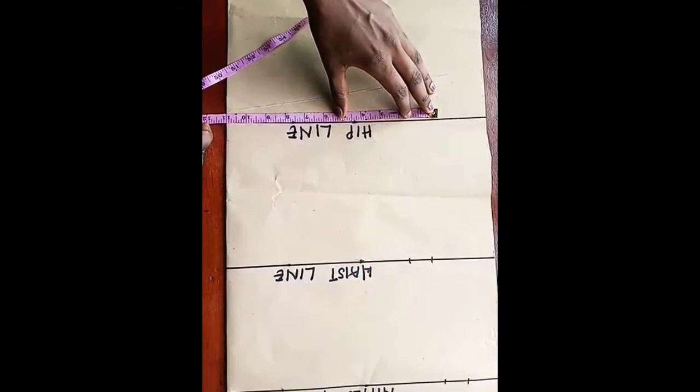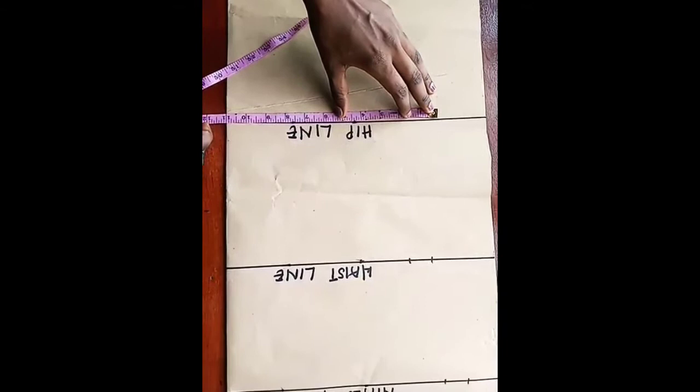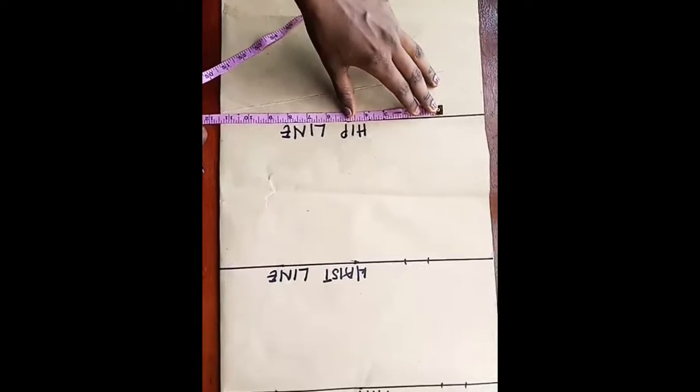instead of the 9 and a half I'm meant to take in, I'll be taking 11 inches because I want it to be very free. So here I'll be taking 11 and a half so that it will be free for me, plus 1 inch seam allowance.